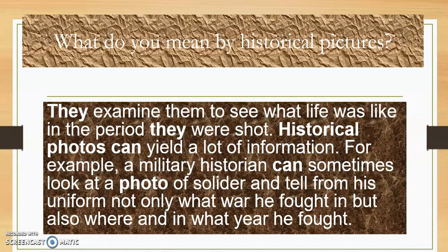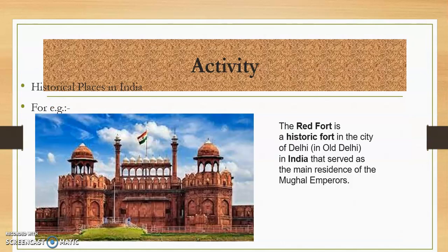A military historian, looking at a photo of a soldier, can give information about their social context. From the uniform you can see which soldiers fought in the war and in which year. So these are different types of historical places.